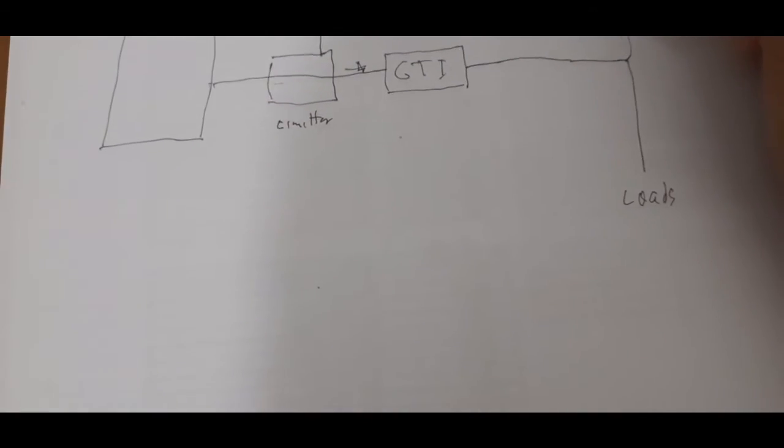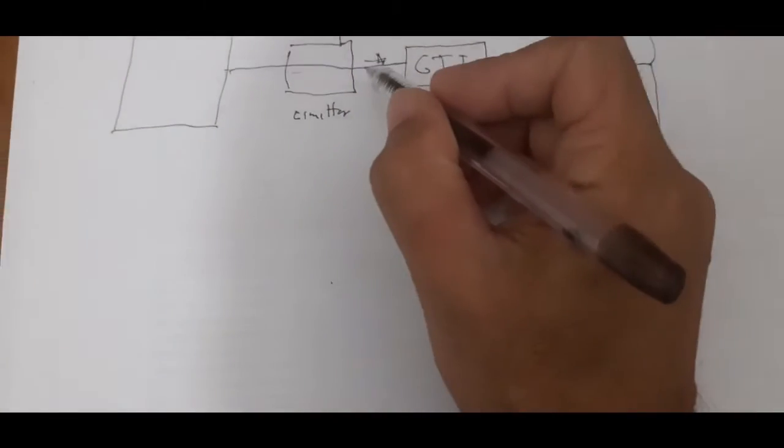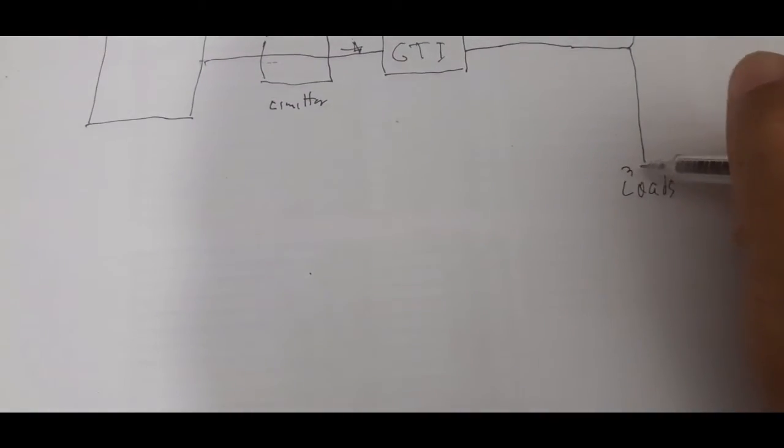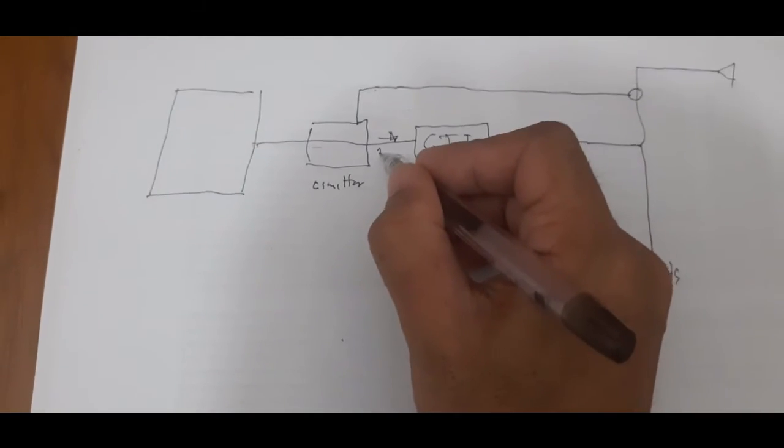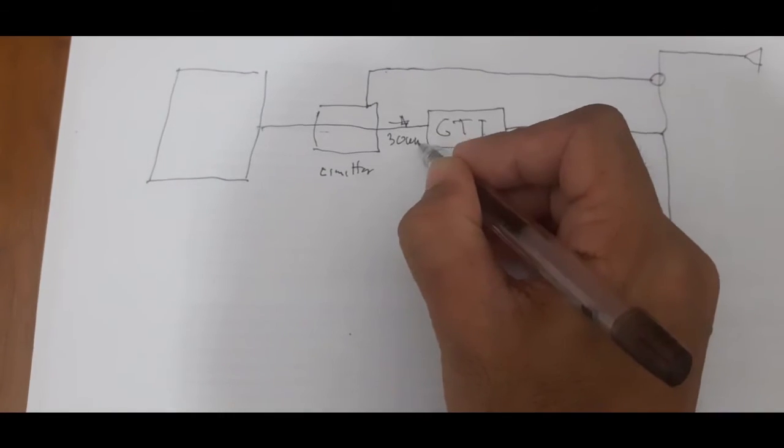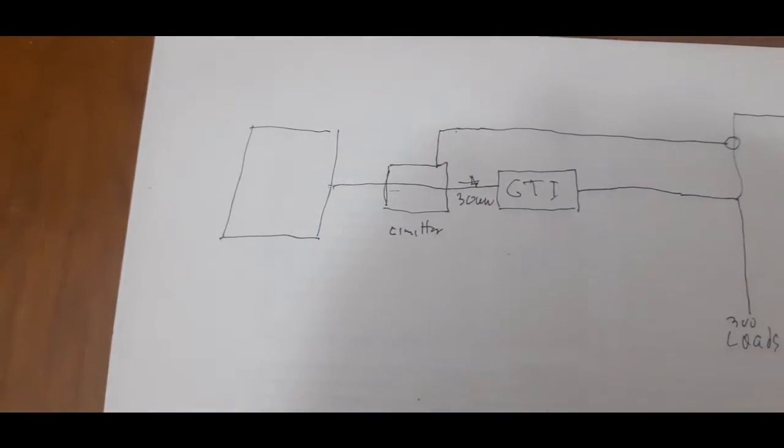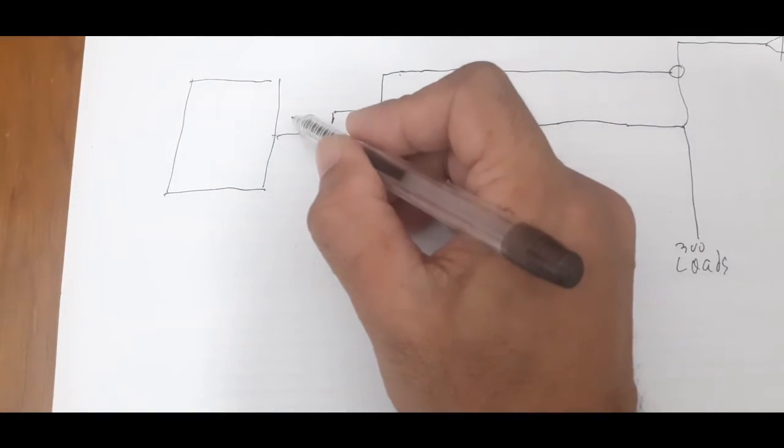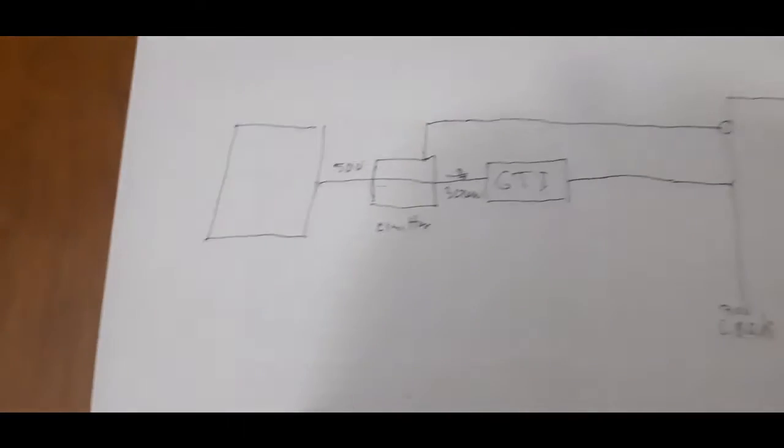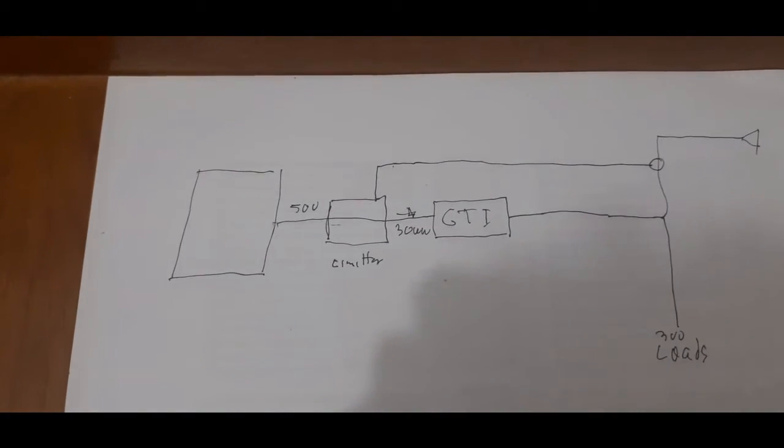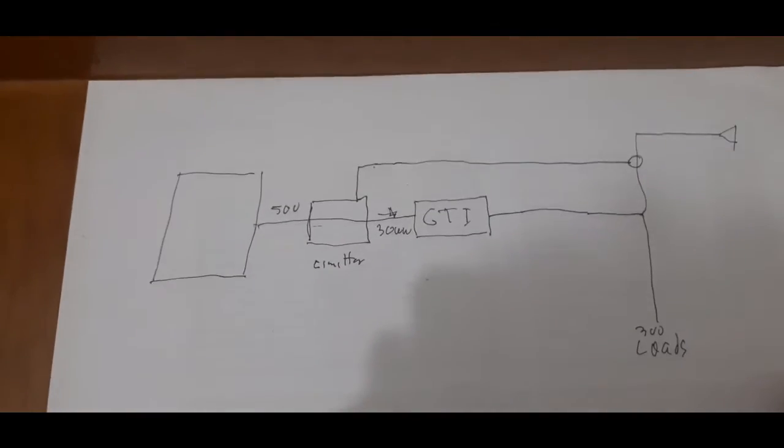So if the load is only 300 watts, this should also have the output of 300 watts, even if the output of the solar is 500. So that's the idea, and it will happen automatically.